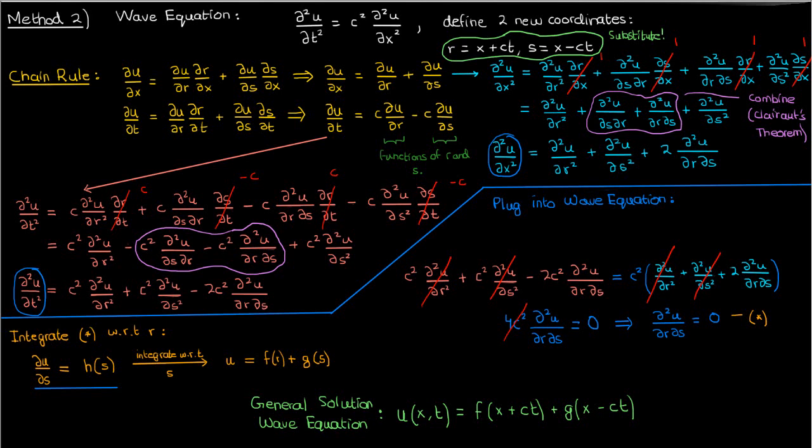Anyway, that concludes the lecture. We've successfully derived the general solution of the wave equation using a simple change of variables. In the next video, we'll discuss the d'Alembert solution of the wave equation, which is going to involve solving an initial value problem.